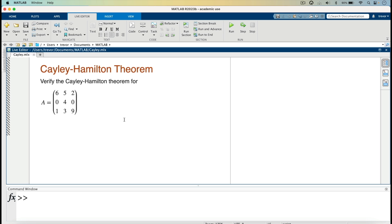That is to say, if we substitute a matrix into its characteristic polynomial, then we get the zero matrix.